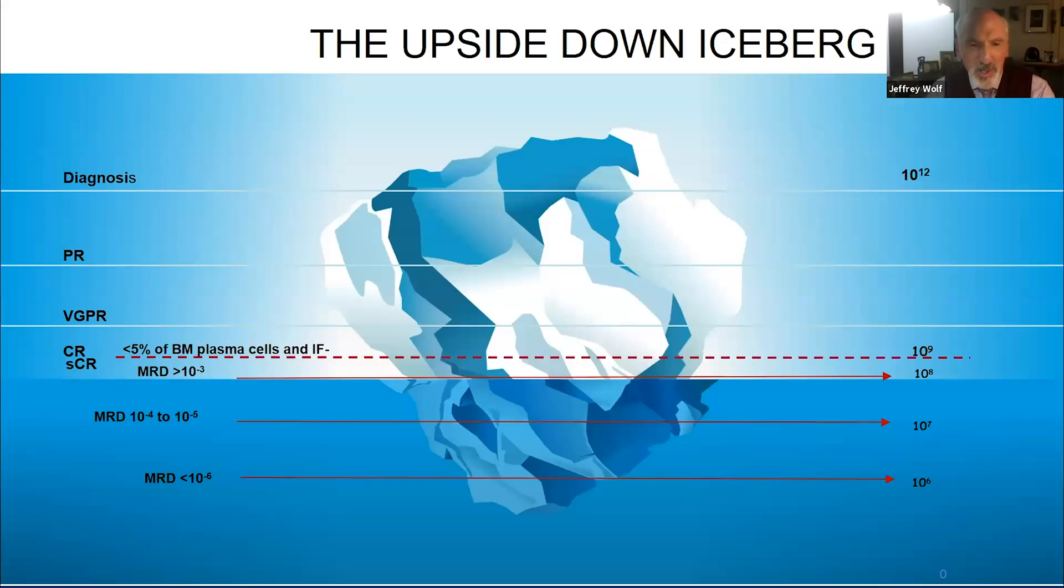This is an upside down iceberg. We all know that they usually float the other way around. But in this case, imagine that the patient's cancer is the iceberg. And at the time of diagnosis, the patient might have as many as a trillion cancer cells that may well weigh several pounds.